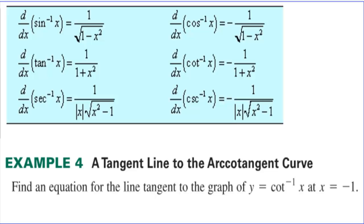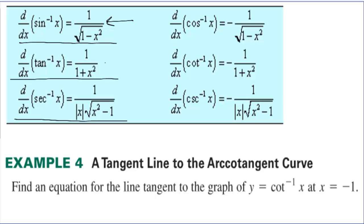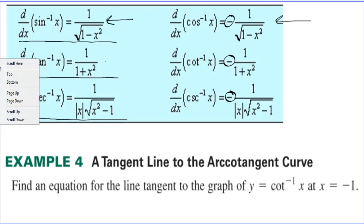Here are all six of the inverse trig derivatives. We have inverse sine, which we derived. Here's inverse tangent. Remember to multiply by the derivative of the inside. Here is inverse secant: 1 over the absolute value of x times square root of x squared minus 1. The good news is that the inverse cofunctions match their counterparts except for a negative sign out front — so inverse cosine is the same as inverse sine but negative. We really only have to learn three derivatives and then their opposites.